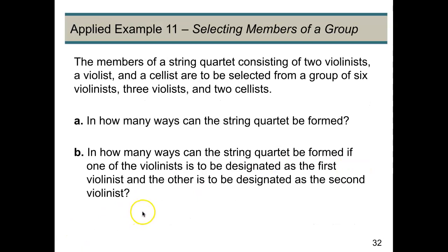Okay, in the second part of this problem, they want to know how many ways the string quartet can be formed if one of the violinists is designated to be the first violinist and the other is designated to be the second violinist. So in this example, choosing the violinist order is important, so let's see how that's going to change our calculation.